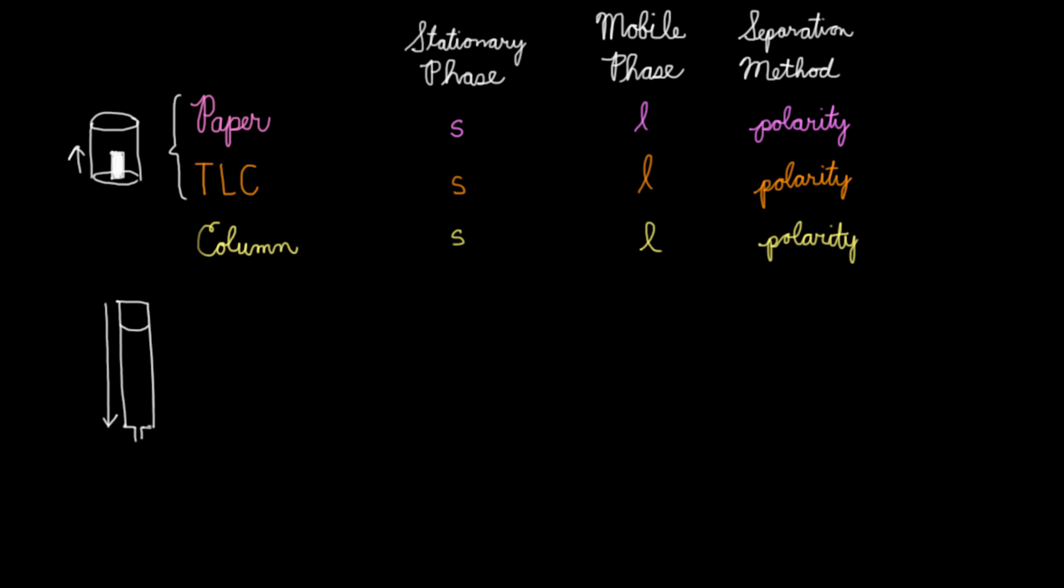So in basic column chromatography, you're usually using something like silica gel as your stationary phase. Your mobile phase is typically an organic solvent, and again you're separating based on polarity.